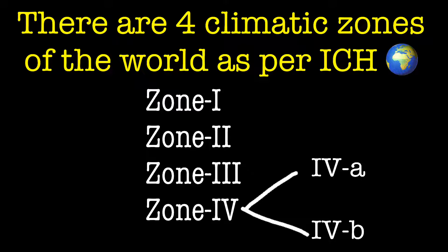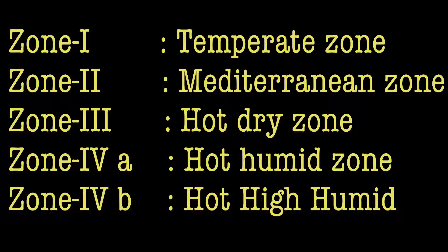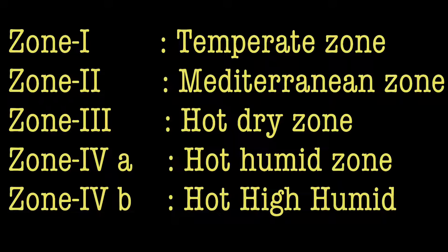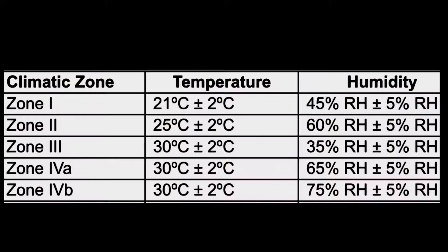Zone 1 is called the Temperate Zone. Zone 2 is called the Mediterranean or Subtropical Zone. Zone 3 is called the Hot and Dry Zone. Zone 4a is called the Hot and Humid Zone, and Zone 4b is called the Hot and High Humid Zone.